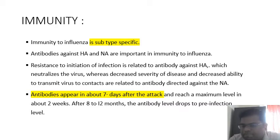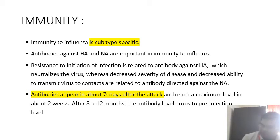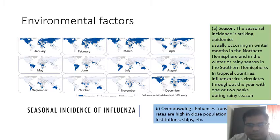A false negative means the patient can go into the community and infect people. Therefore, the first thing you should do is an antigen test such as RT-PCR, which is very useful for diagnosing in the early phase of disease. Antibody tests are used in the later phase of disease.